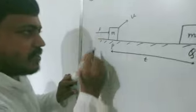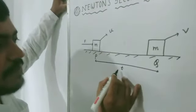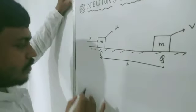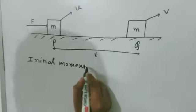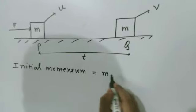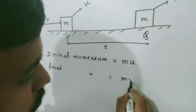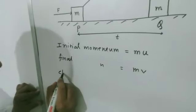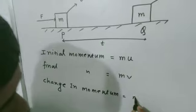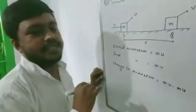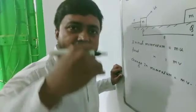We are applying a force F, and due to the application of force, initial velocity equals U. After a certain time T, the object gains velocity V. So that means: initial momentum equals mass into initial velocity, that is M×U. Similarly, final momentum equals M×V. And change in momentum equals final minus initial, that is Mv minus Mu. Because change always means final minus initial — final momentum is Mv, initial momentum is Mu.